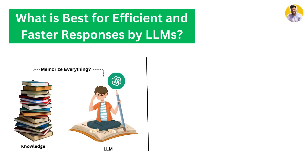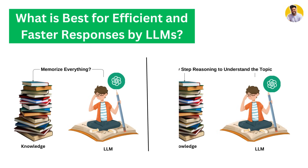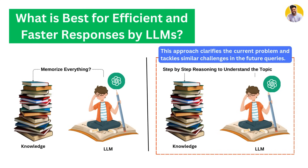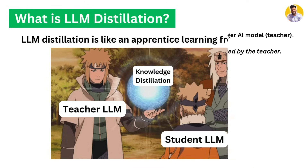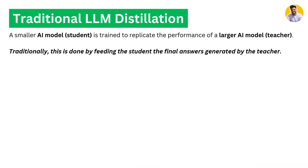Imagine you are a student trying to grasp complex subjects. Instead of just memorizing every answer, you can benefit from understanding the step-by-step reasoning behind the solutions. This approach clarifies the current problem and also helps you tackle similar problems in the future. LLM distillation is just like an apprentice learning from the master — the teacher is transferring their knowledge to the student. In the traditional way, a smaller language model is trained to replicate the performance of a larger language model by feeding the student the final answers of the teacher model.